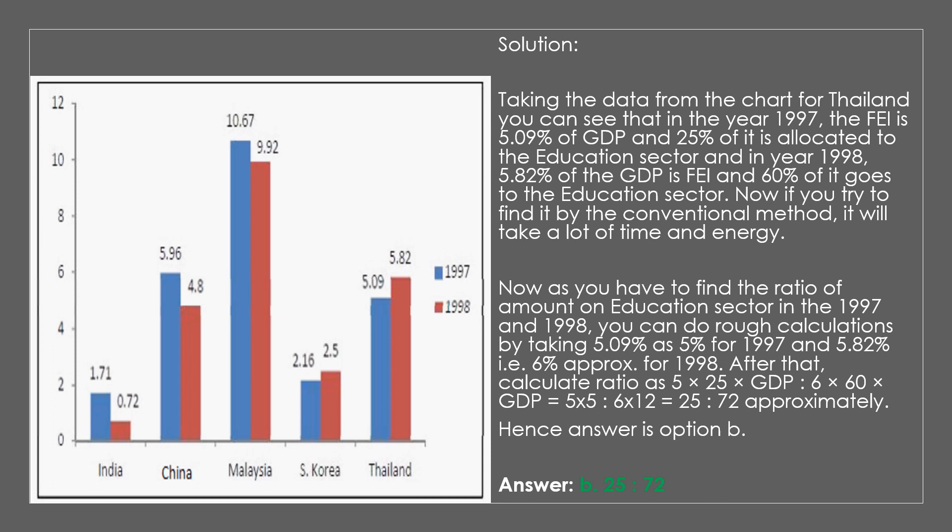From the chart for Thailand, in 1997 the FEI is 5.9% of GDP and 25% of it is allocated to the education sector. In 1998, 5.82% of GDP is FEI and 60% of it goes to education. For rough calculations, take 5.9% ≈ 5% for 1997 and 5.82% ≈ 6% for 1998. The ratio becomes 5×25 : 6×60 = 125:360 = 25:72 approximately. Hence the answer is option B.